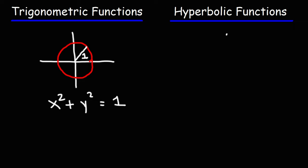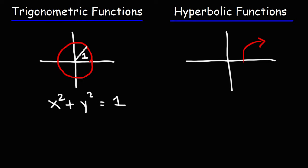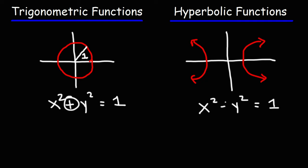Hyperbolic functions are based not on a unit circle, but on the hyperbola. One form of it looks like this. That particular form has this equation: x squared minus y squared is equal to 1. The only difference is we've exchanged a plus with a minus.